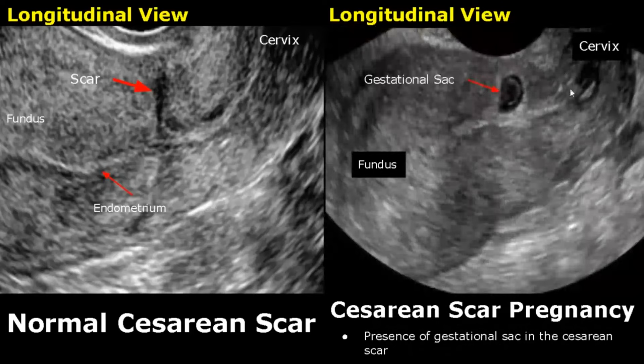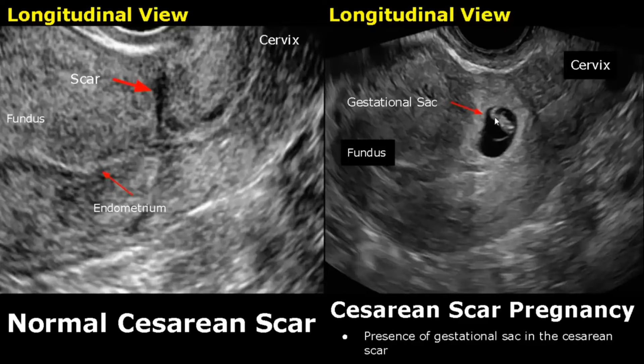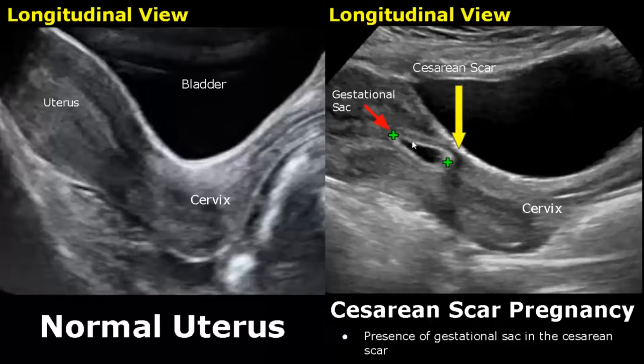Caesarean scar pregnancy is very rare — it is a type of ectopic pregnancy, but not entirely accurate since the gestational sac is still implanted within the uterus. The gestational sac is present in the caesarean scar. Here is another image of a caesarean scar pregnancy where we can see the embryo very clearly. This is a transabdominal image showing the gestational sac within the caesarean scar.